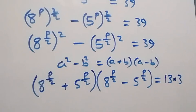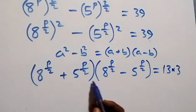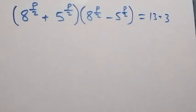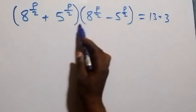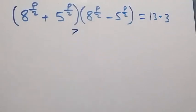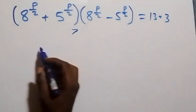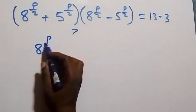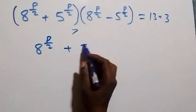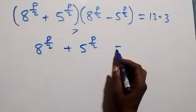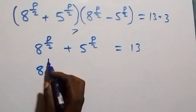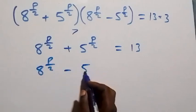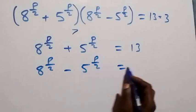We can separate 39 as 13 times 3. Since these two brackets multiply to give 39, one bracket must be 13 and one must be 3. Obviously the first bracket is greater, so: 8 raised to power p over 2 plus 5 raised to power p over 2 equals 13, and 8 raised to power p over 2 minus 5 raised to power p over 2 equals 3.